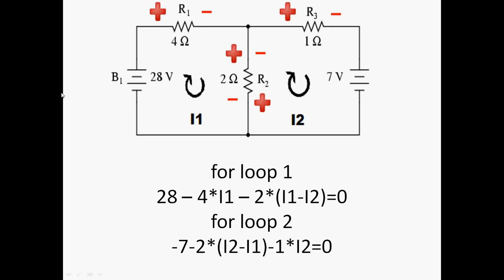Step 2 remains the same for two loops as well: we have to assign positive and negative signs to the ends of the resistances. For loop 1, I1 is entering one side of R1, hence a positive sign. For loop 1, I1 is entering resistance R2 from one side, hence a positive sign there. For loop 2, the case is opposite — the current enters from the other side, so the positive sign is downwards and negative is upwards for R2.